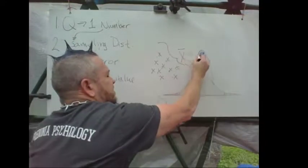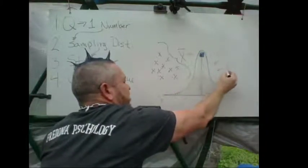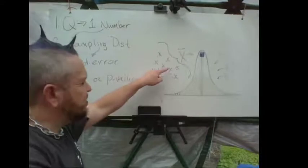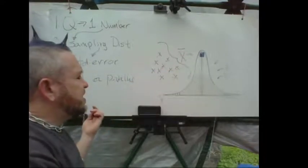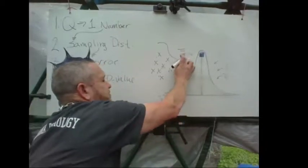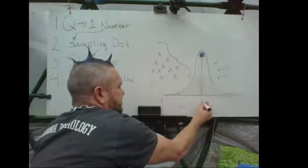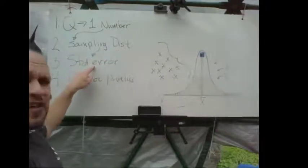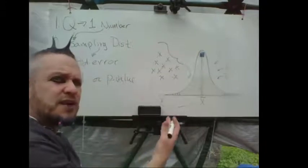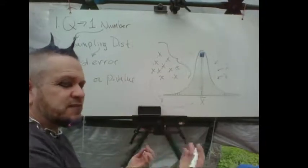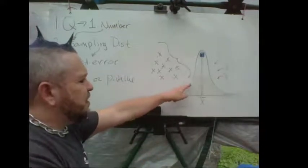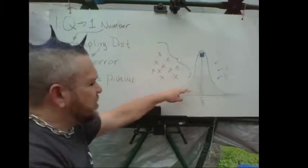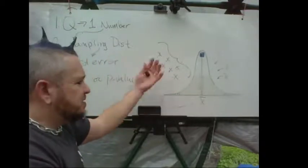Everything in here is a mean — millions of other means. If we imagine sampling over and over again with the same sample size from the same population, these all go in here. We specify the standard error, which always has something from the sample plus n. For the standard deviation of this sampling distribution, it's the standard deviation divided by the square root of n. The distribution of all the means is increasingly normal.